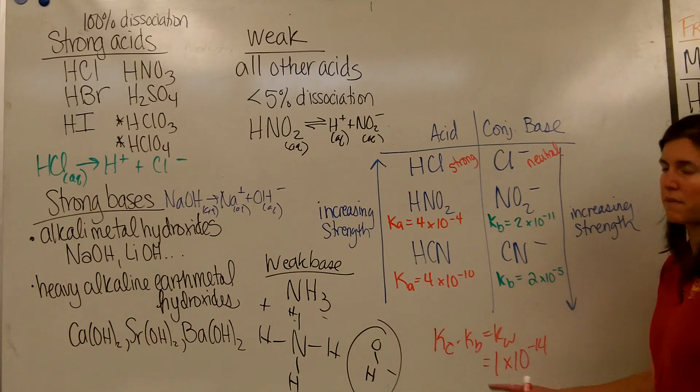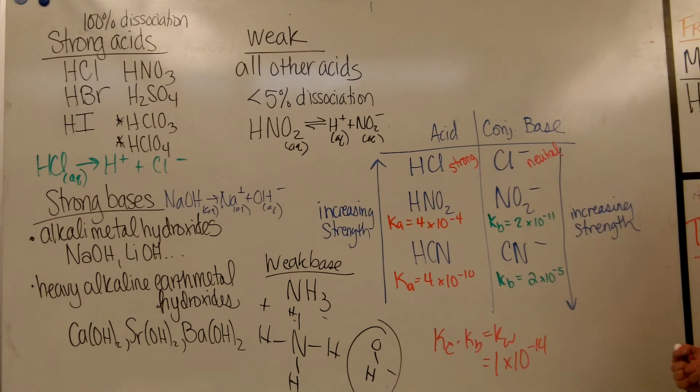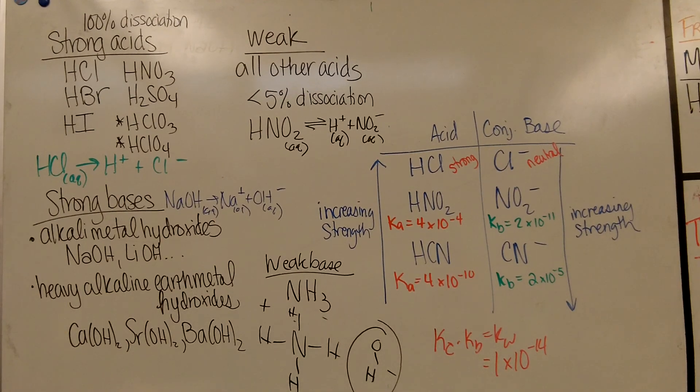So this is another way of seeing as the strength of your acid increases, the strength of the conjugate base will decrease. It's an inverse relationship there. So if one goes up, the other one must go down. So that's a little bit on weak and strong acids and bases. So we'll see you next time.